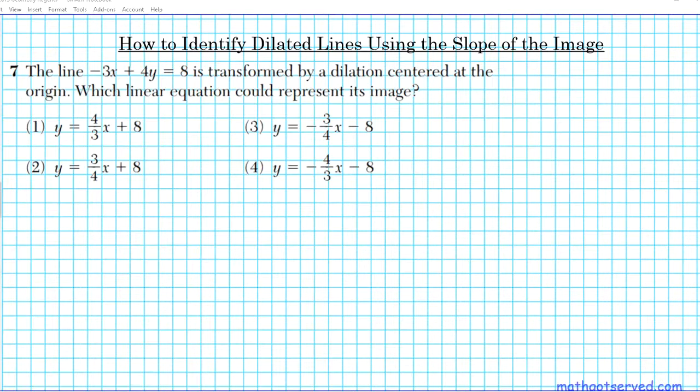Dilated lines using the slope of the image line. Question 7 reads: the line negative 3x plus 4y equals 8 is transformed by a dilation centered at the origin. Which linear equation could represent its image?